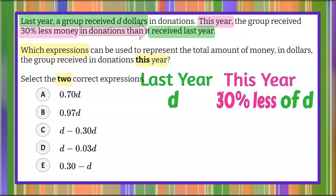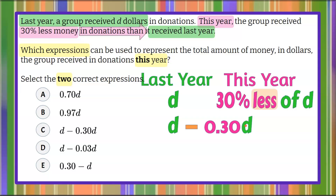Let's rewrite this so that we can have an algebraic expression. D represents last year. When we look at 30% less, less means we're going to subtract. When we talk about 30% in math and do computation with it, we need to convert the percent to a decimal or fraction. Eliminating the percent sign, we move the decimal point two spaces to the left, and that becomes 0.30 — 30% or 30 hundredths. So 0.30D being subtracted from D means 30% less of D.